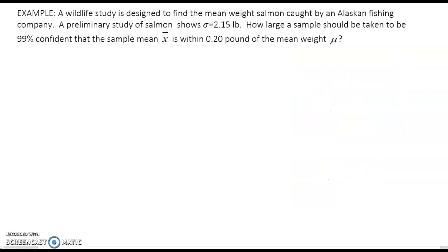Let's look at an example for finding sample size. A wildlife study is designed to find the mean weight of salmon caught by an Alaskan fishing company. The preliminary study of salmon shows that sigma is 2.15 pounds. How large a sample should be taken to be 99 percent confident that the sample mean x bar is within 0.2 pounds of the mean weight mu.